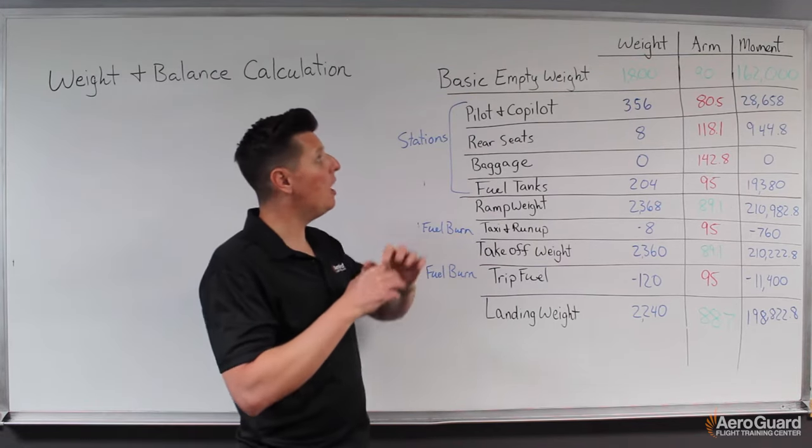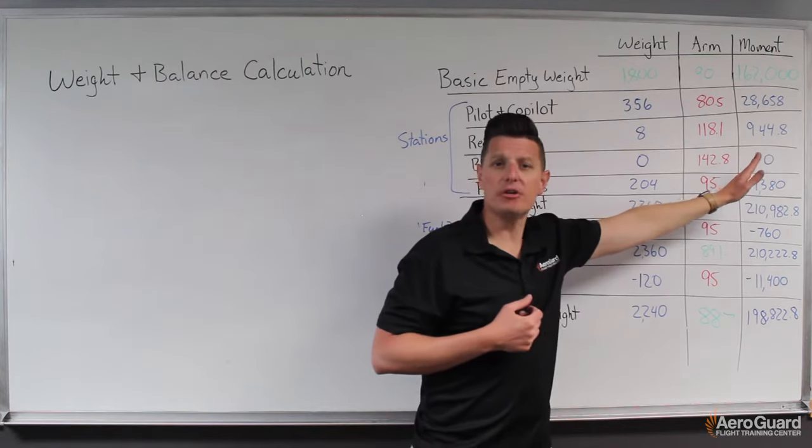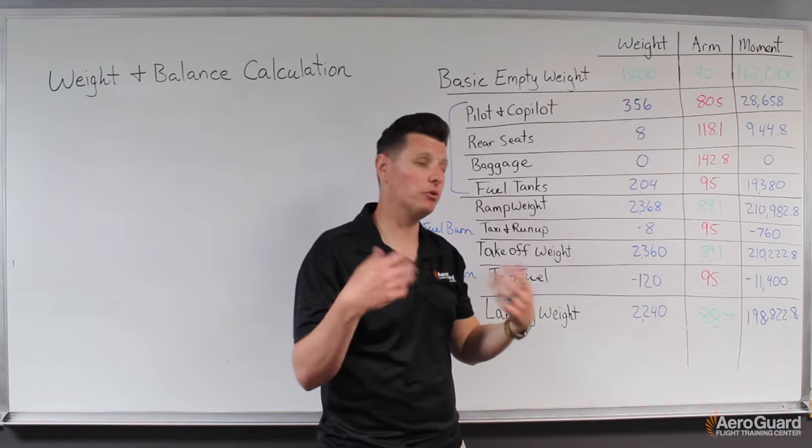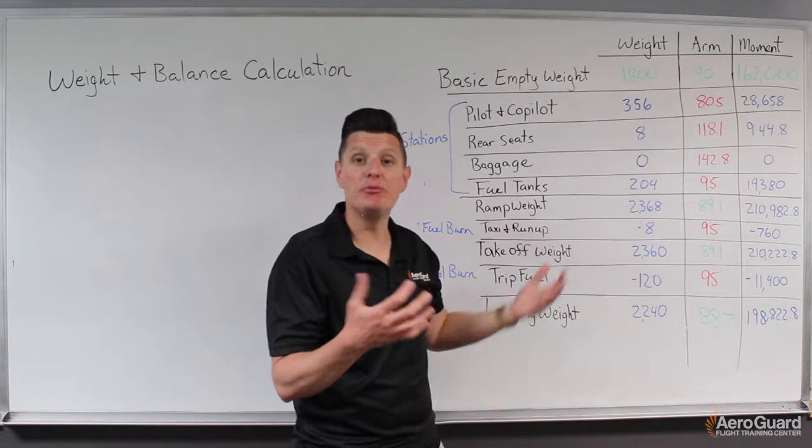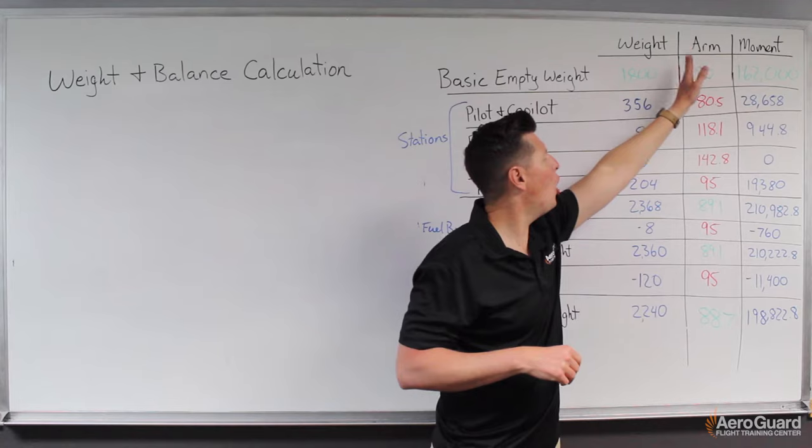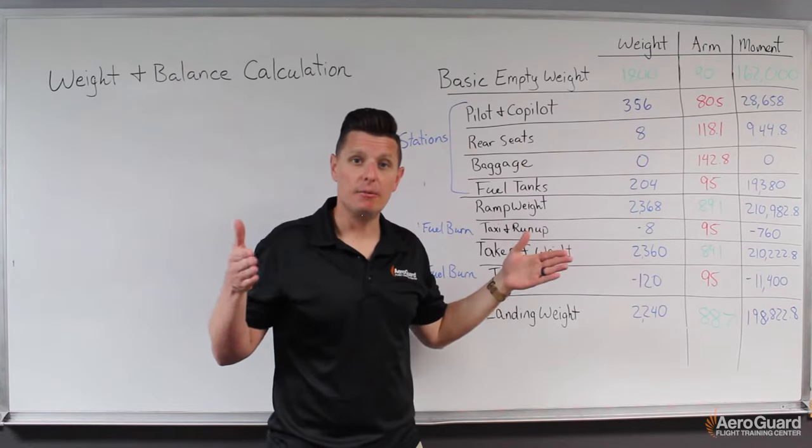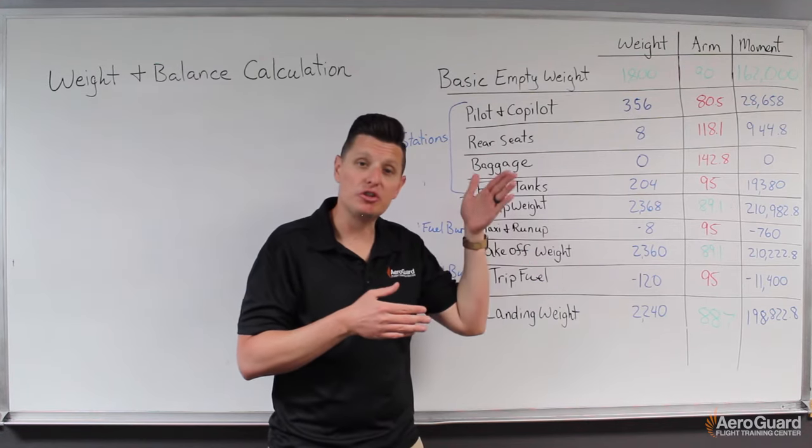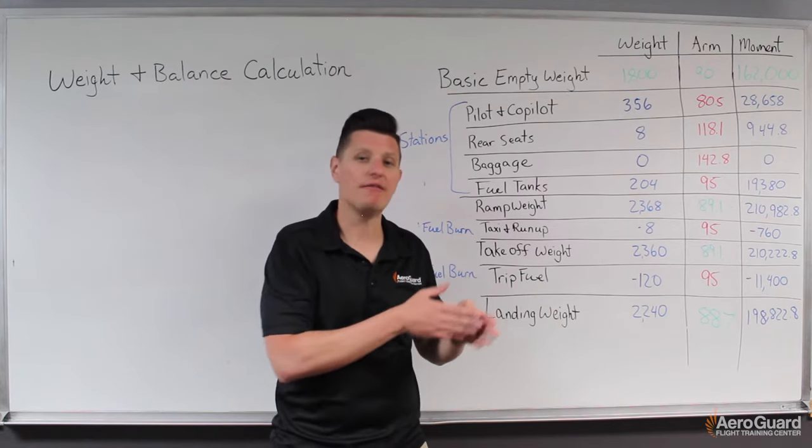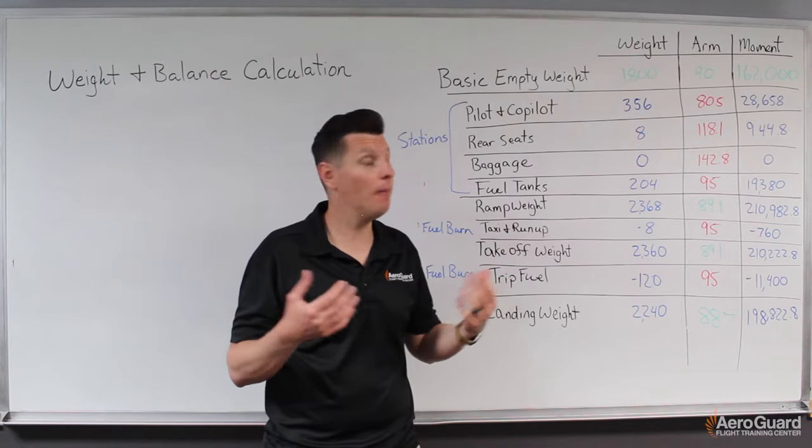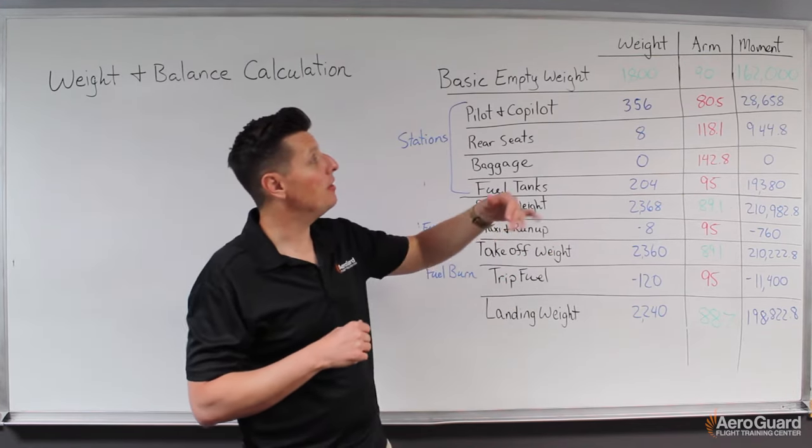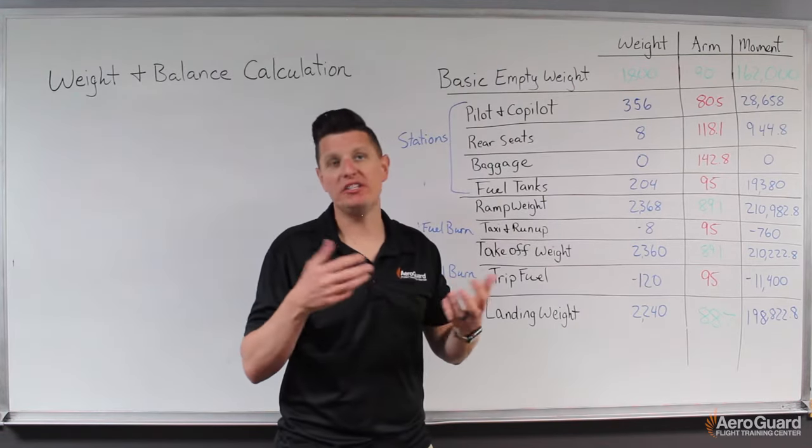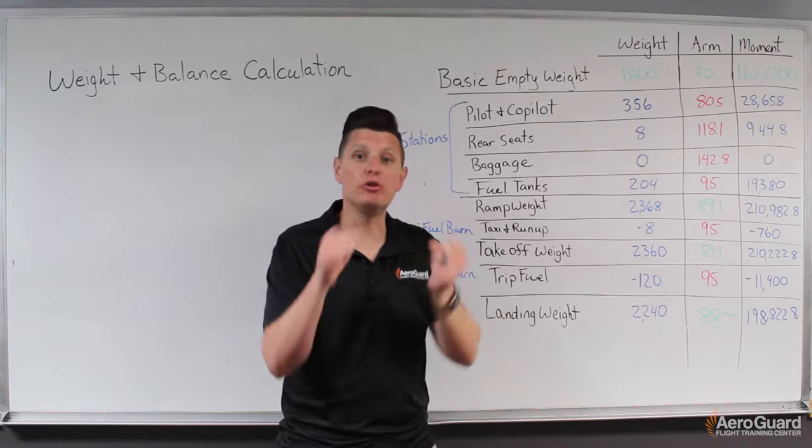To get started, the three columns of numbers we see here: the first one is weight, referring to the force or weight of whatever the object is. The arm refers to a distance measured from what the manufacturer calls a datum or datum plane, a fixed point on the aircraft that all distances are measured from. The last column is the moment.